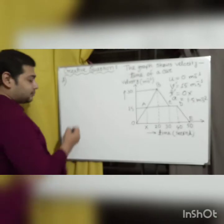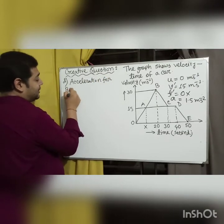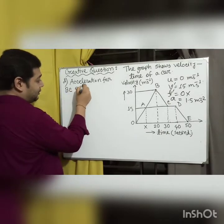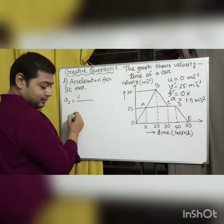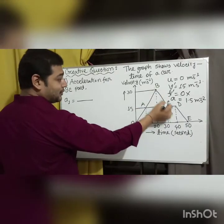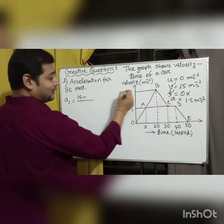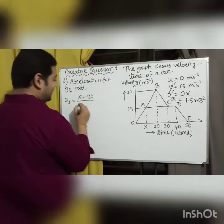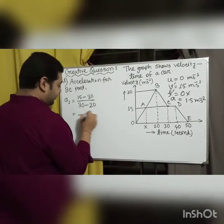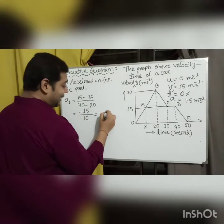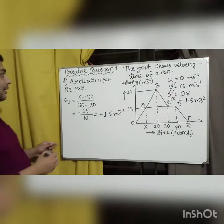For the BC part, acceleration A₁ equals (final velocity minus initial velocity) divided by time. Final velocity is 15 m/s, initial velocity is 30 m/s, final time is 30 s and initial time is 20 s. So A₁ equals (15 minus 30) divided by (30 minus 20), which equals minus 15 divided by 10, giving minus 1.5 meters per second squared. This negative acceleration is called deceleration.